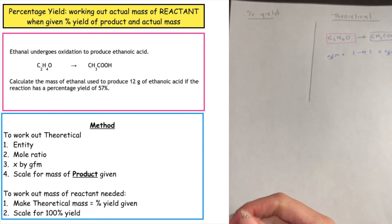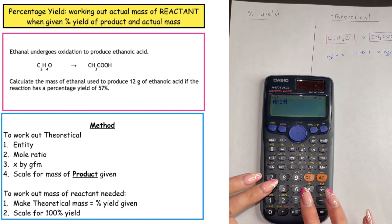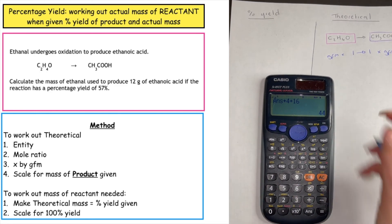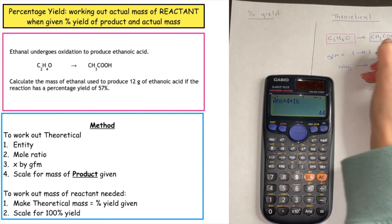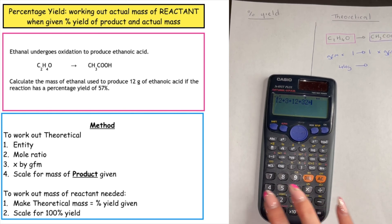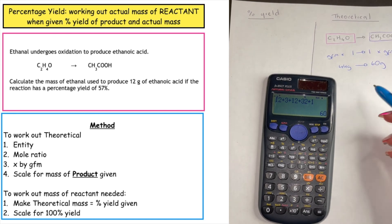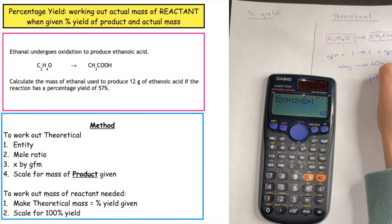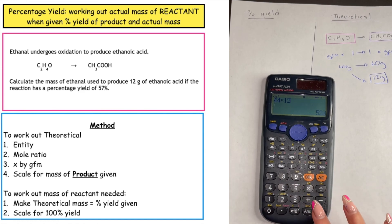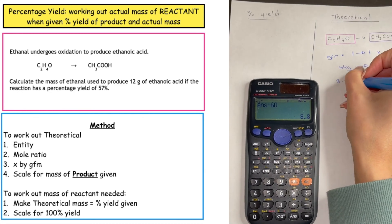The GFM of ethanol: 2 times 12 plus 4 plus 16 gives 44 grams, which would produce ethanoic acid at 12 plus 3 plus 12 plus 32 plus 1 equals 60 grams. The question wants us to produce 12 grams of product, so we use that as our scalar: 44 times 12 divided by 60, giving us a theoretical mass of 8.8 grams.